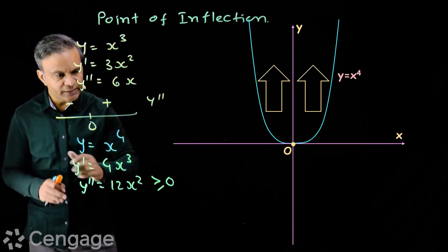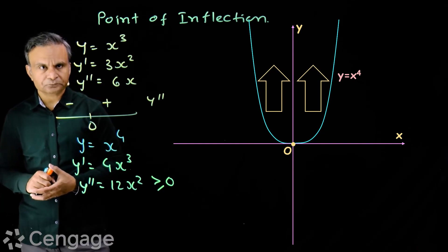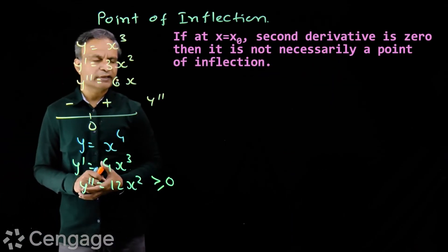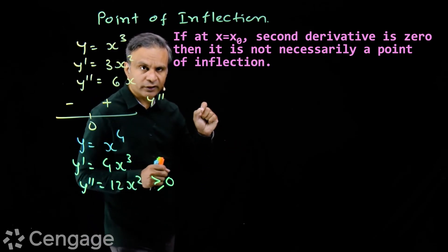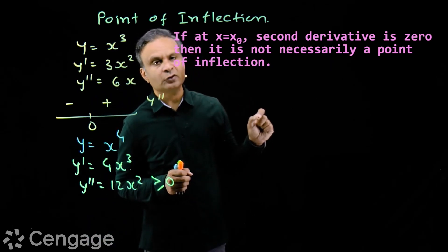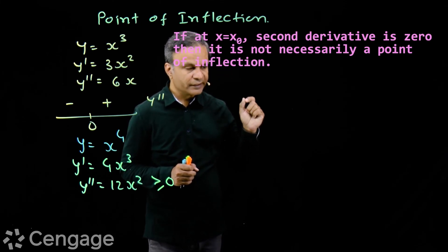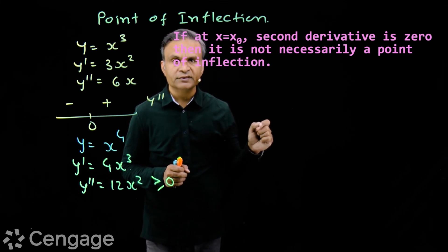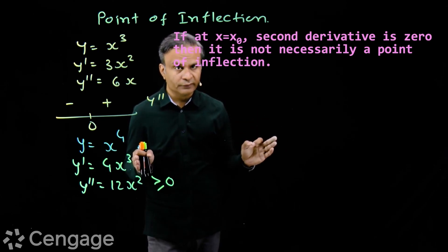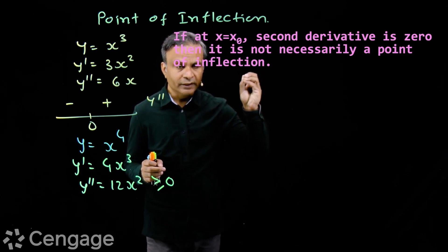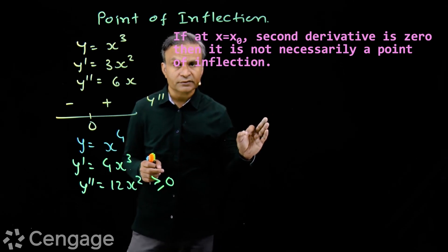So this function y = x⁴ has no point of inflection. What we learn: if for a differentiable function the second derivative vanishes at some point, it is not necessarily a point of inflection. The required condition is that the second derivative must change its sign.